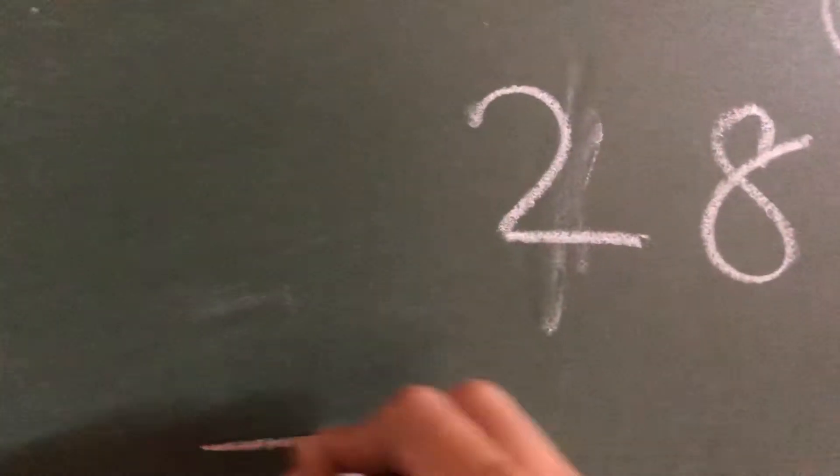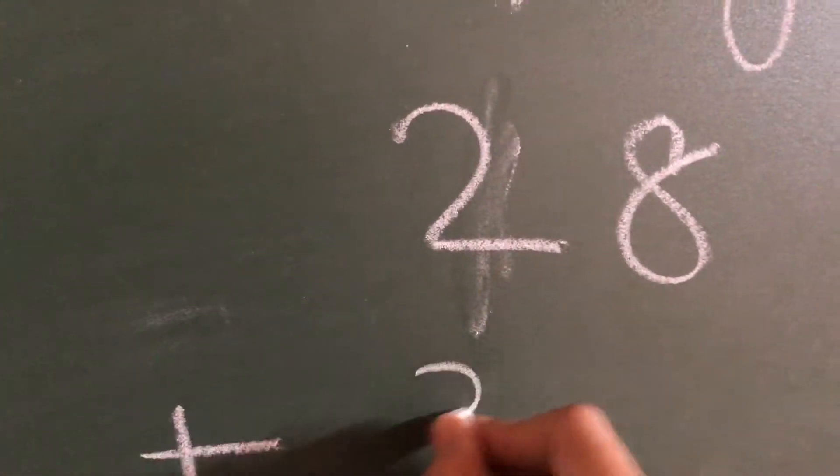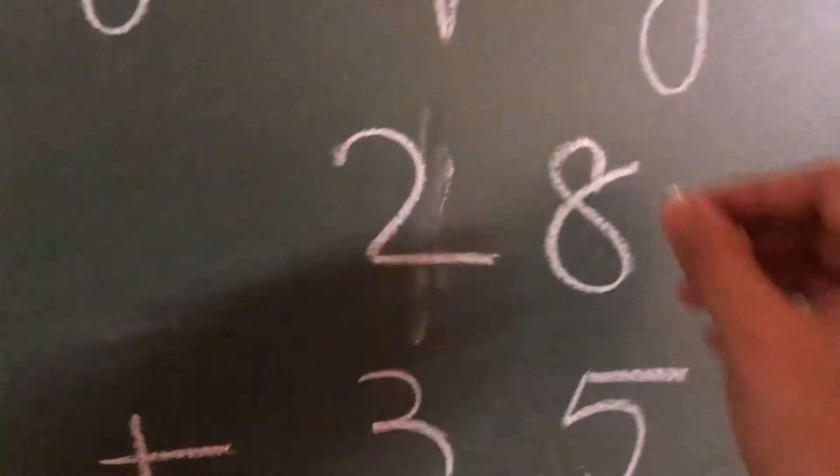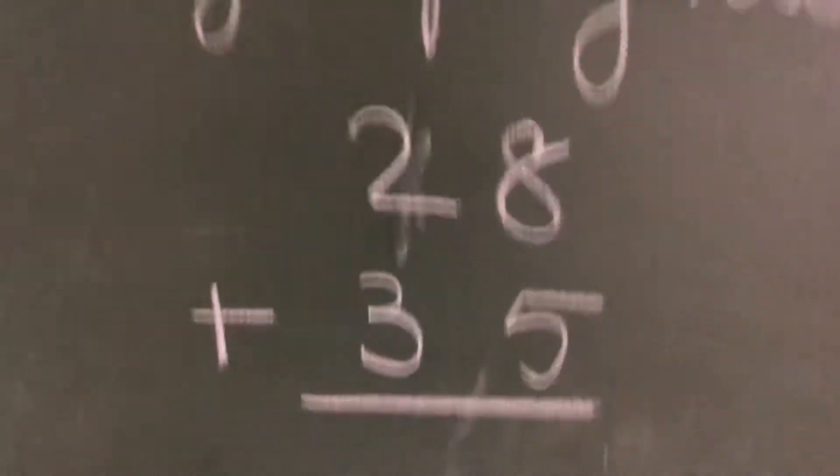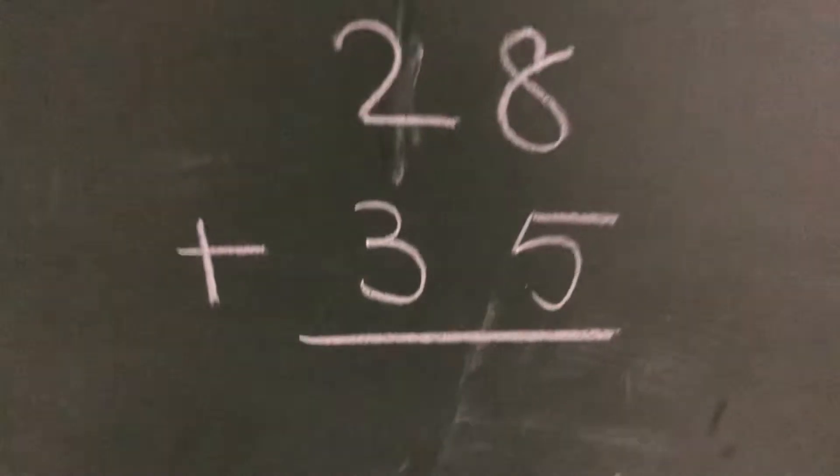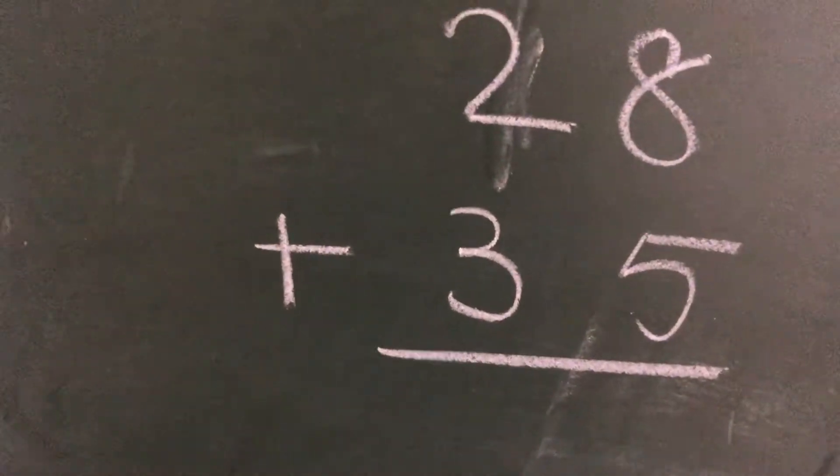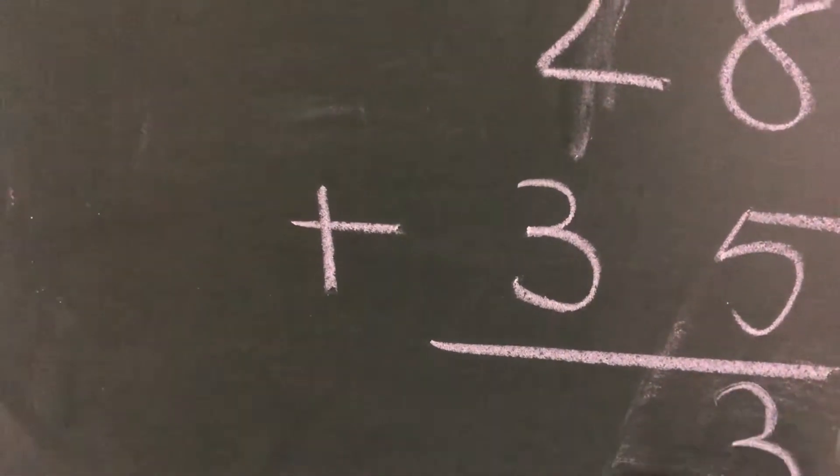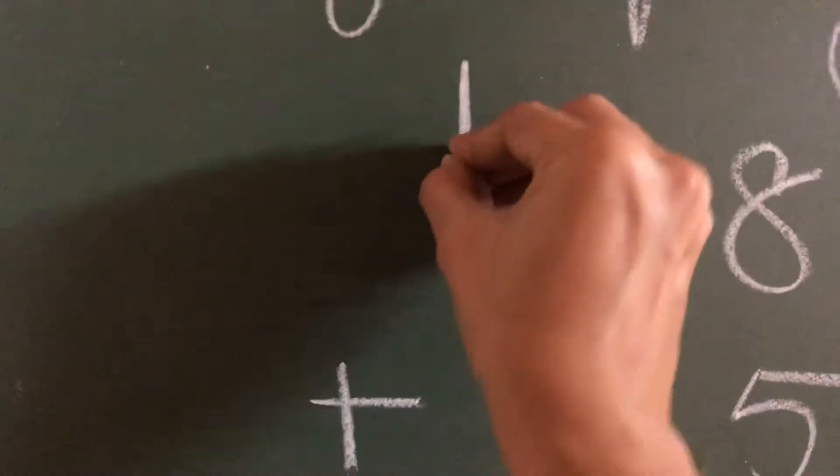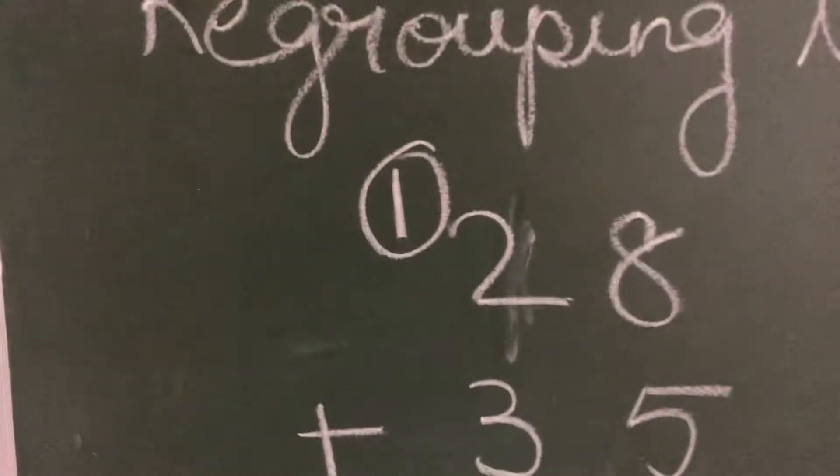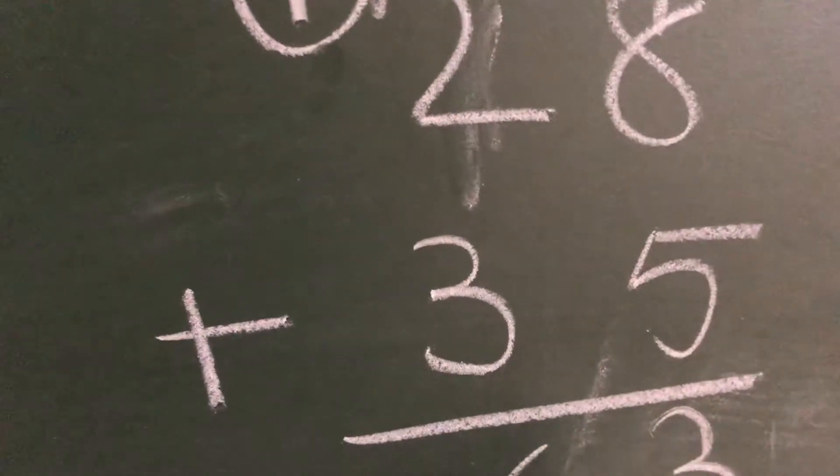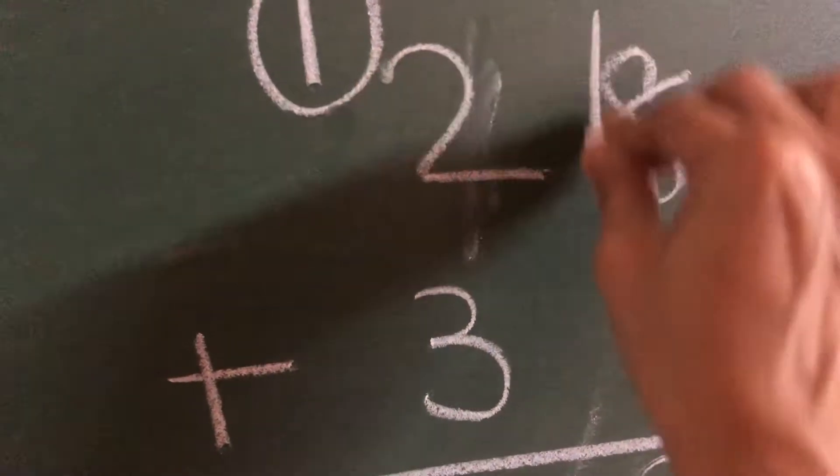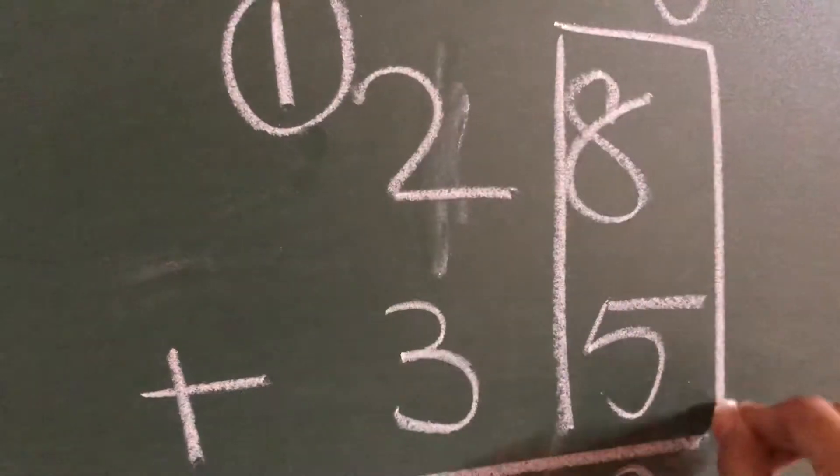If I have a number suppose 87 plus 65, I will add these two numbers. 8 plus 5 is 13. So I will write 3 here and 10 space 1 here. Now this is called regrouping. Now 2 plus 1 is 3, 3 plus 3 is 6.